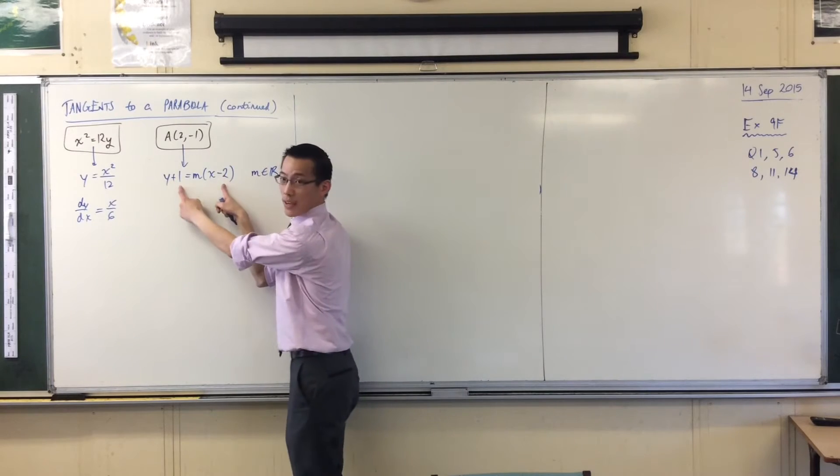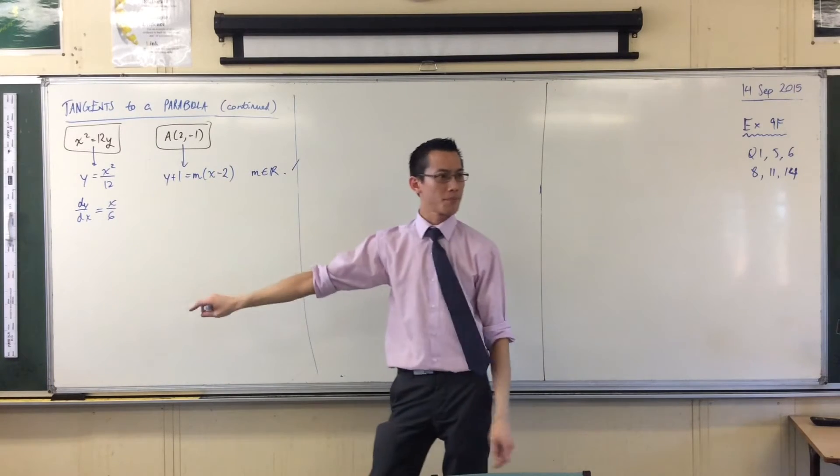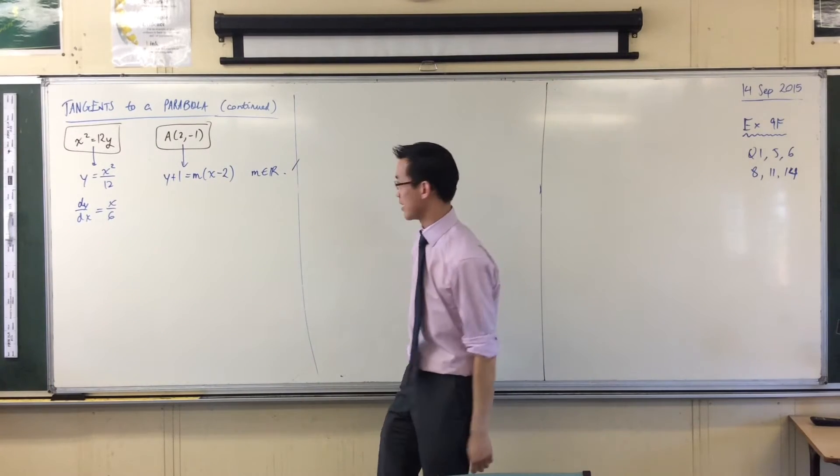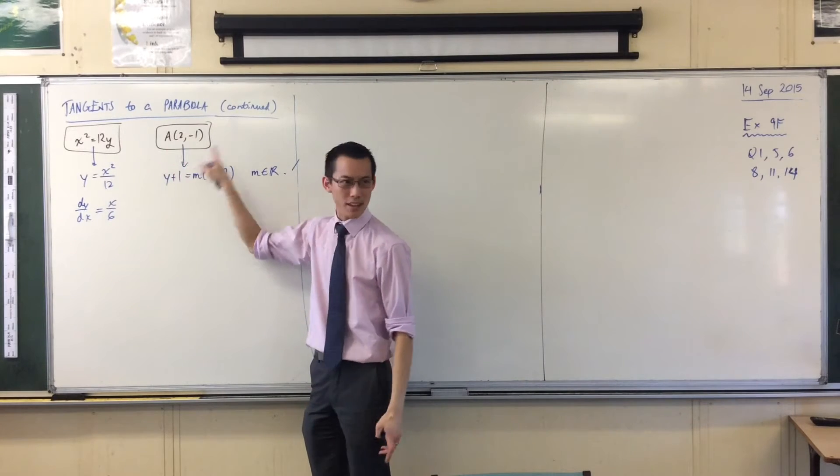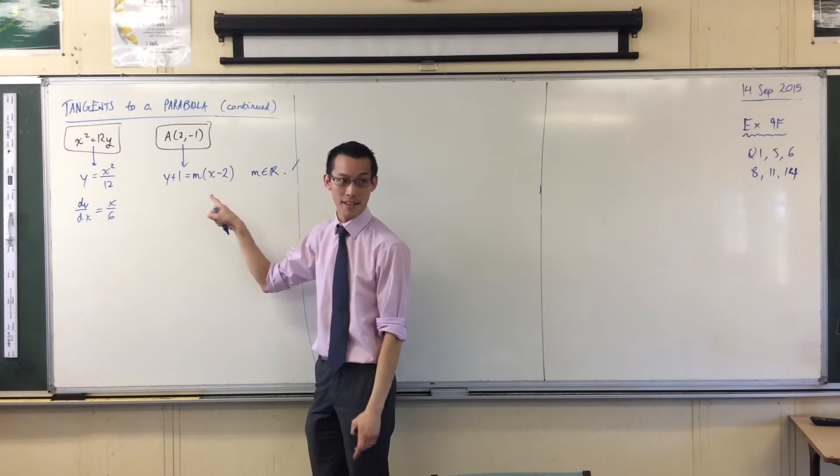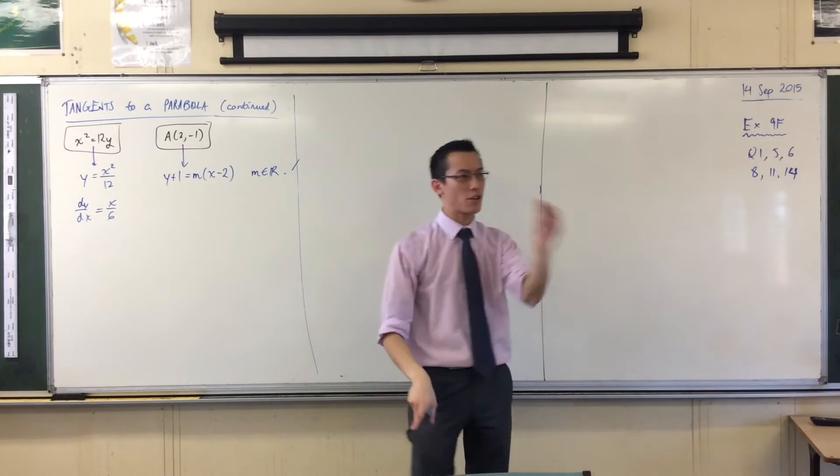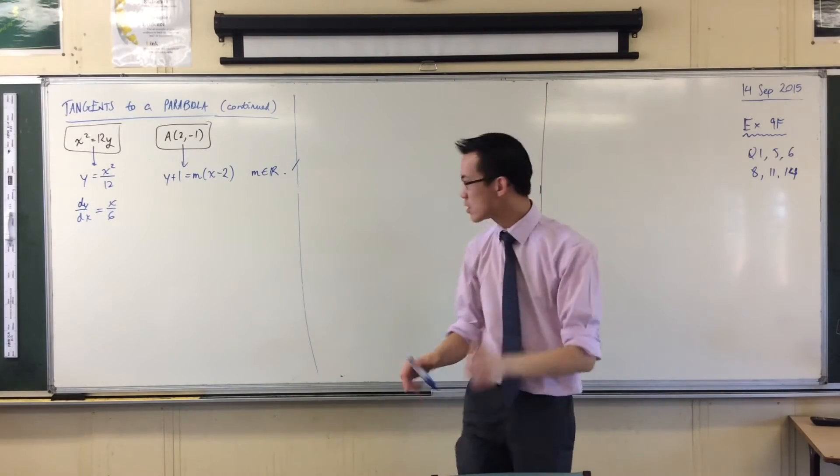You recognize this, right? There's my point gradient form, okay? Now, the reason why I want point gradient is because I know that the two tangents will be two of these lines, and all I need to do is pick the right gradient. Pick the right gradient. As it were, if you like, let's just do this really messily, okay?